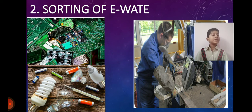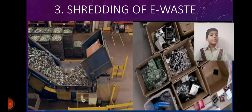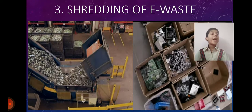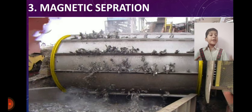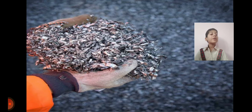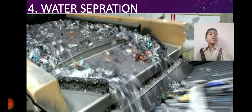Some of the waste is manually dismantled for reuse. The rest of the waste is shredded into small pieces for accurate sorting of material. The shredded waste is passed under a magnet, which separates steel and iron from the mixture. Other materials like plastic and glass are separated through water separation.